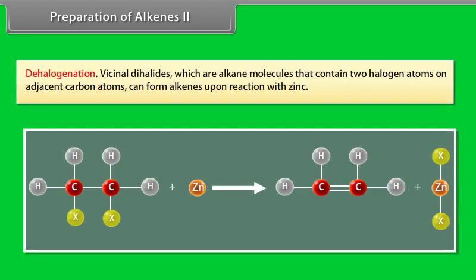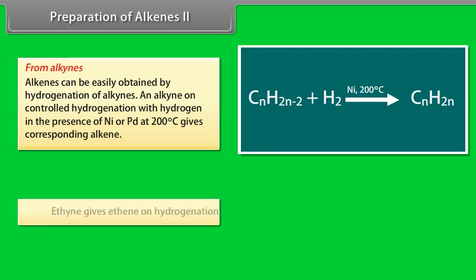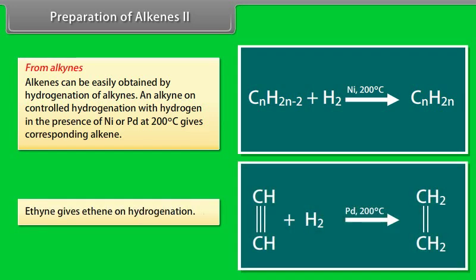Dehalogenation: vicinal dihalides, which are alkane molecules that contain two halogen atoms on adjacent carbon atoms, can form alkenes upon reaction with zinc. From alkynes: alkenes can be easily obtained by hydrogenation of alkynes. An alkyne on controlled hydrogenation with hydrogen in the presence of Ni/Pd at 200 degrees centigrade gives the corresponding alkene. Ethyne gives ethene on hydrogenation.